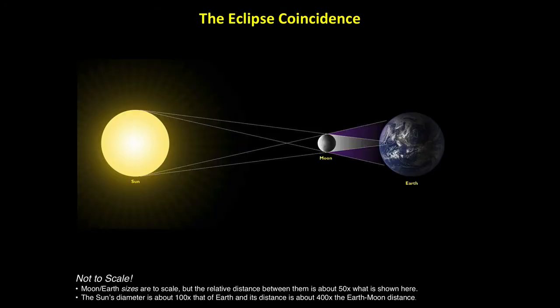Finally, it's worth remembering that we see spectacular total solar eclipses only because the moon is just the right size and distance from Earth. If the moon were farther away, it would never be able to cover the sun completely. If it were much closer, it would block the sun's atmosphere as well as its surface, so we wouldn't see the beautiful corona.